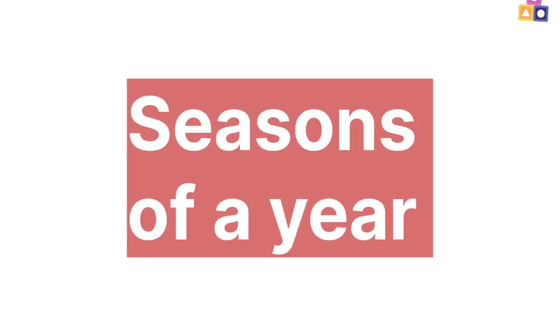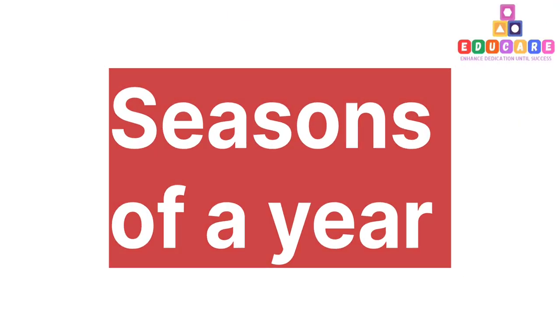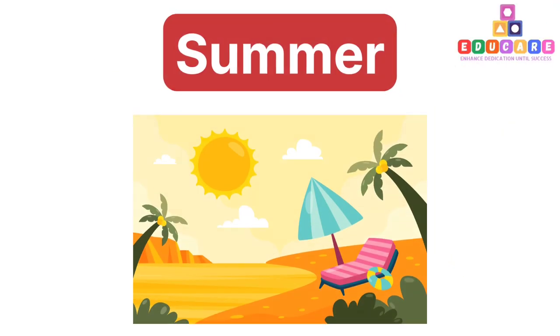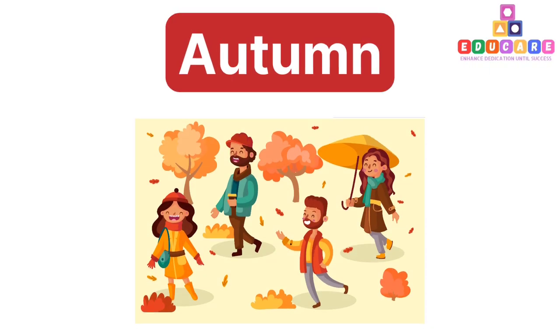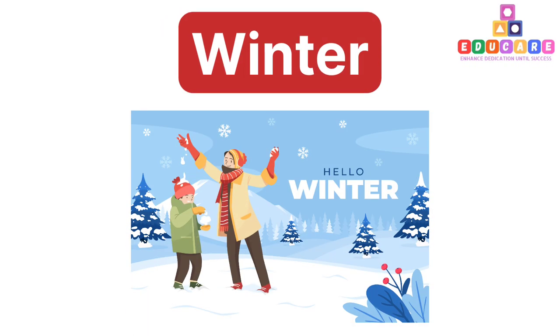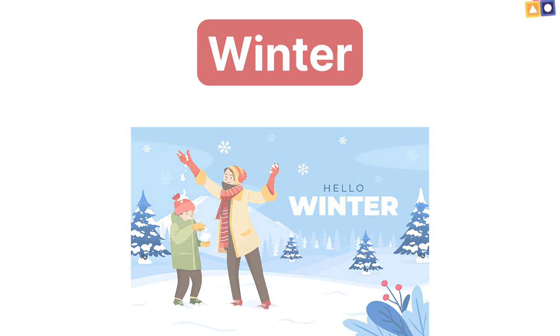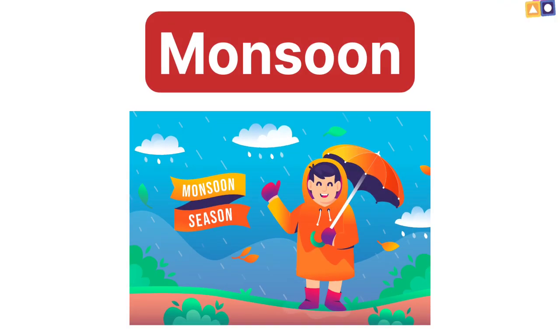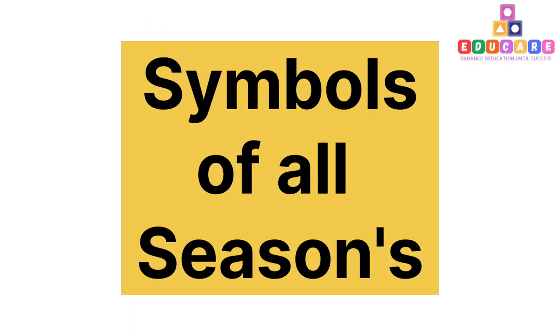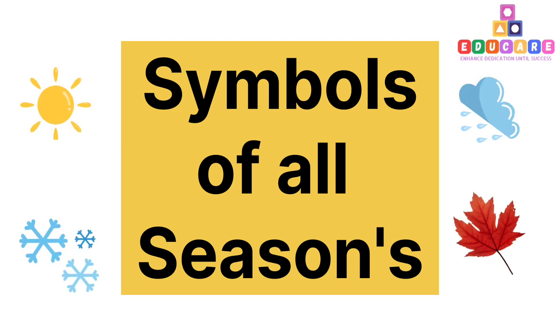Seasons of a year: Summer, Autumn, Winter, Spring, Monsoon. Now let's see the symbols of all seasons.